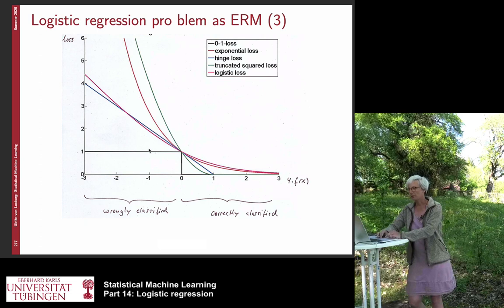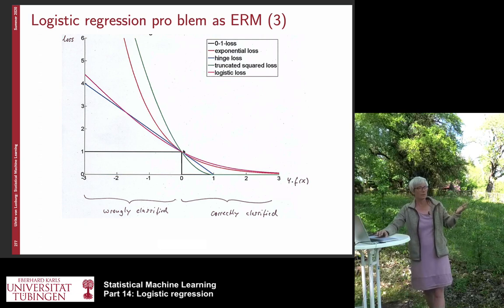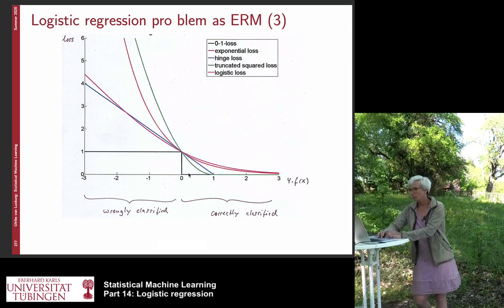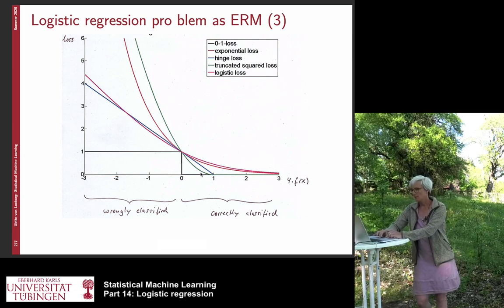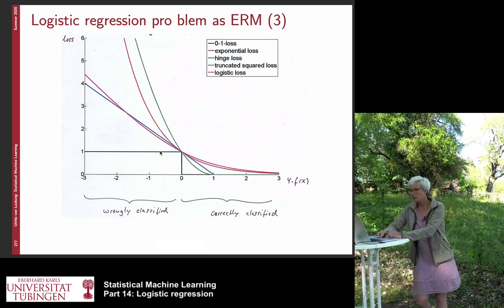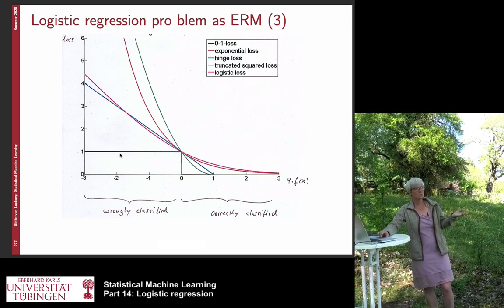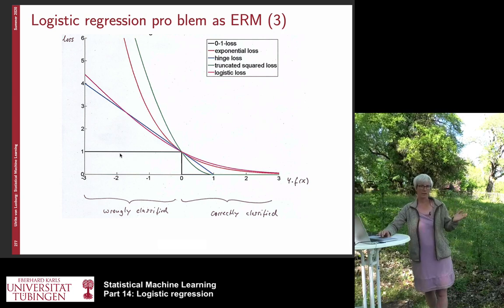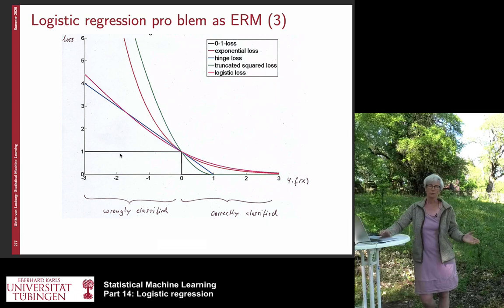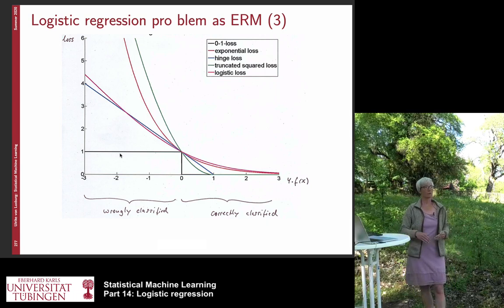And maybe let's look at the first loss function that is sort of the obvious one for classification, the zero-one loss. It essentially says, whenever I predict it correctly, this loss is zero, it's the black function here. Whenever I predict wrongly, the loss is one. No matter how I come to my prediction, what is the function value f(x), I don't care. I only look at the sign. If the sign is correct, I don't incur a loss. If the sign is incorrect, I incur a loss of one.